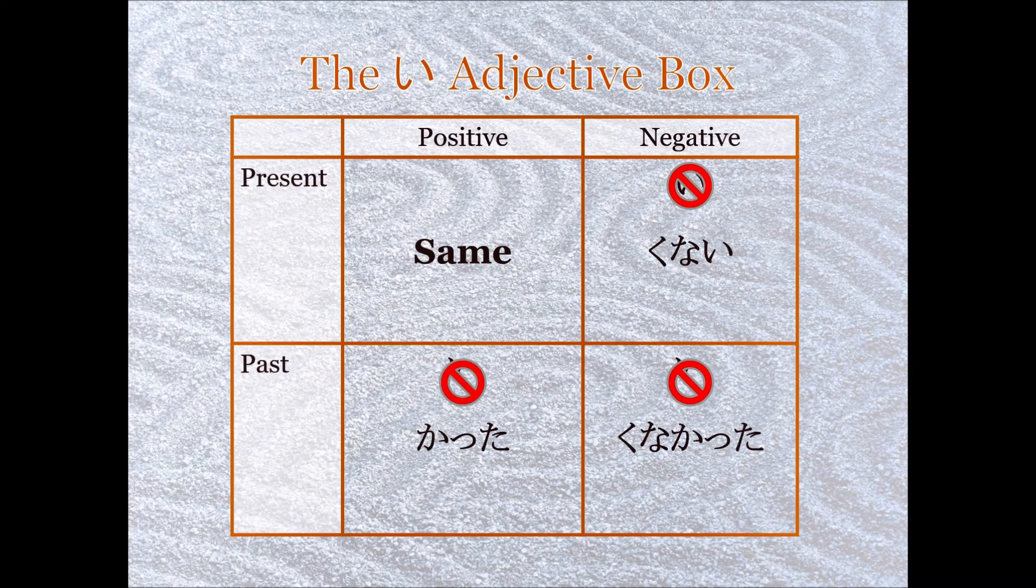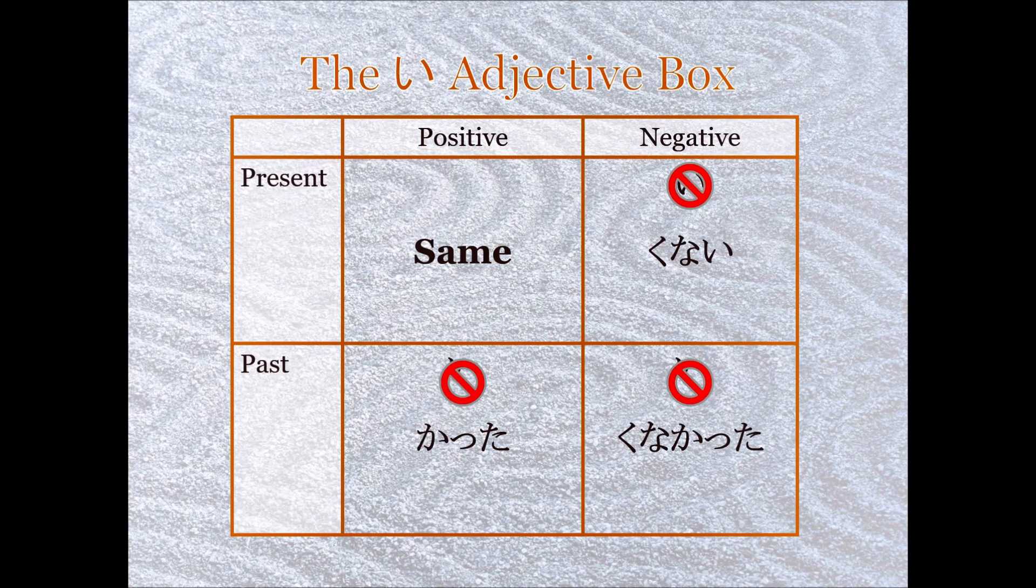So let's go back to i-adjectives here for a little bit. They have a box, just like we have with some verbs. So if we look at the box on the top, we have two columns, positive and negative, and then we have two rows, present and past. So samui is cold, and it's an i-adjective. So I would just leave it the same if it was present and positive. And I could just throw a des on the end if I wanted to make it formal, or leave the des off if I wanted to make it informal.